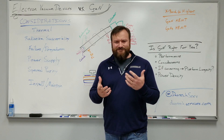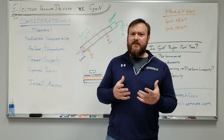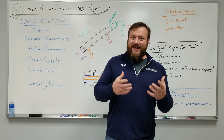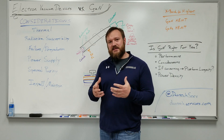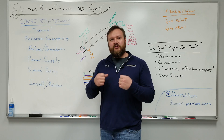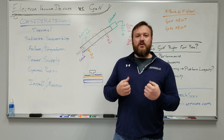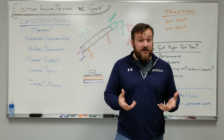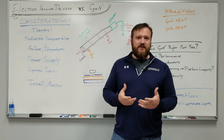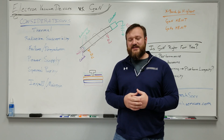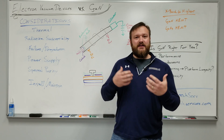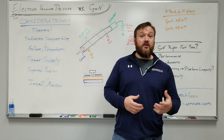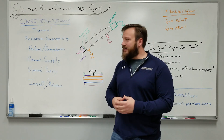Tubes — they're old. They get a bad rap in some ways, actually. They have a lot of characteristics that can be quite desirable. So what are some of the considerations you have when looking at a TWT-type electron device versus something like a gallium nitride power amplifier, say for radar or electronic warfare?